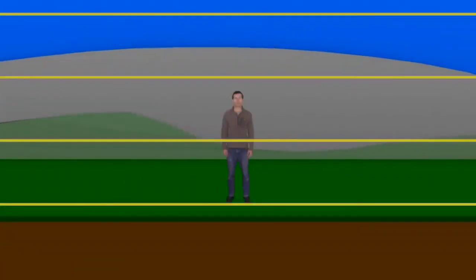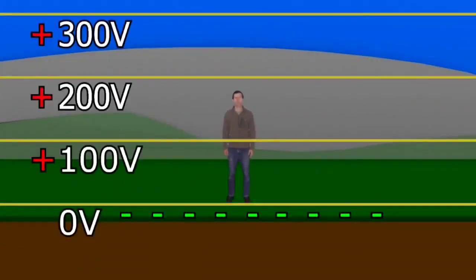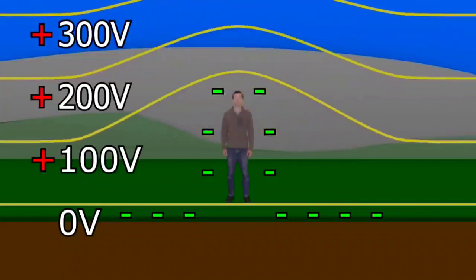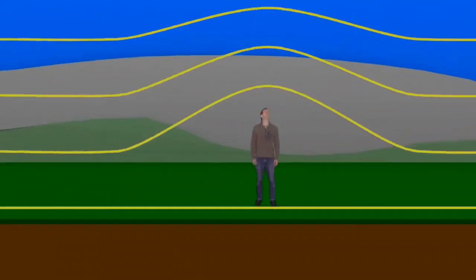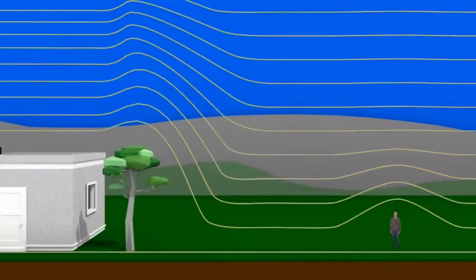But if this voltage exists between your head and the ground, why don't you get a shock? The reason is that your body is a good enough electrical conductor that standing on the ground, you're basically part of the ground. The equipotential lines would look like this. There's still effectively zero volts between the top of your head and ground. Similar effects happen with trees, buildings, and so on.